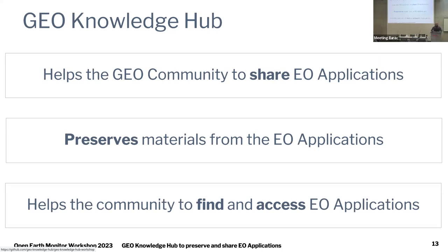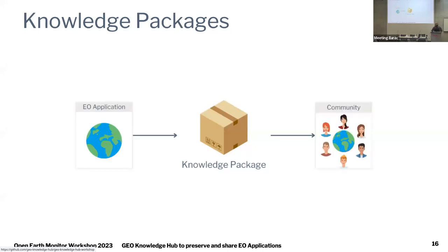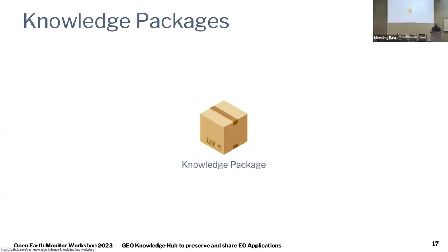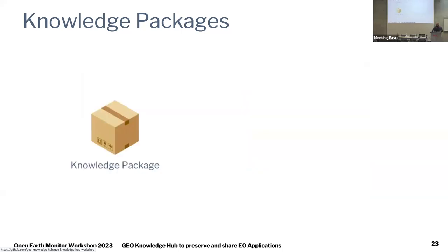The GeoKnowledgeHub helps the community to share, preserve, find, and access Earth observation applications. To make this possible, we use a central concept called a knowledge package. A knowledge package allows us to centralize and describe all the resources used to compose an Earth observation application — for example, in-situ datasets, tools, articles, notes, user stories, or training materials — all centralized in one single place.